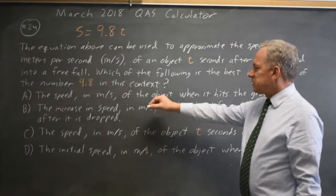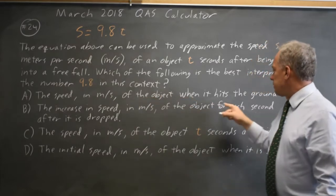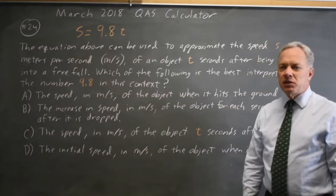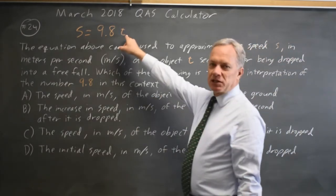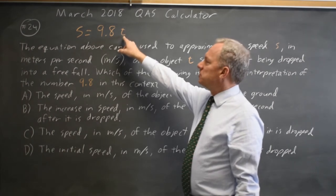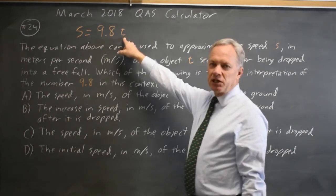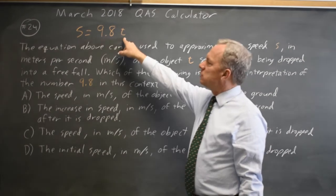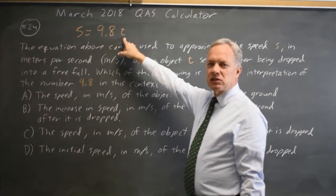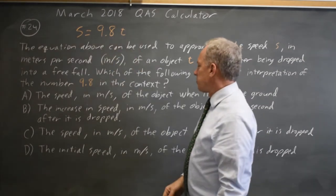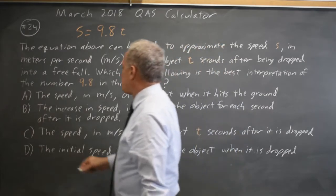Choice A says 9.8 is the speed of the object when it hits the ground, but that doesn't make sense because we don't know what time it hits the ground. At time t equals 0, the speed is 0. At time t equals 1, speed is 9.8. At time t equals 2, speed is 19.6. We would need to know what time it hits the ground to verify this.